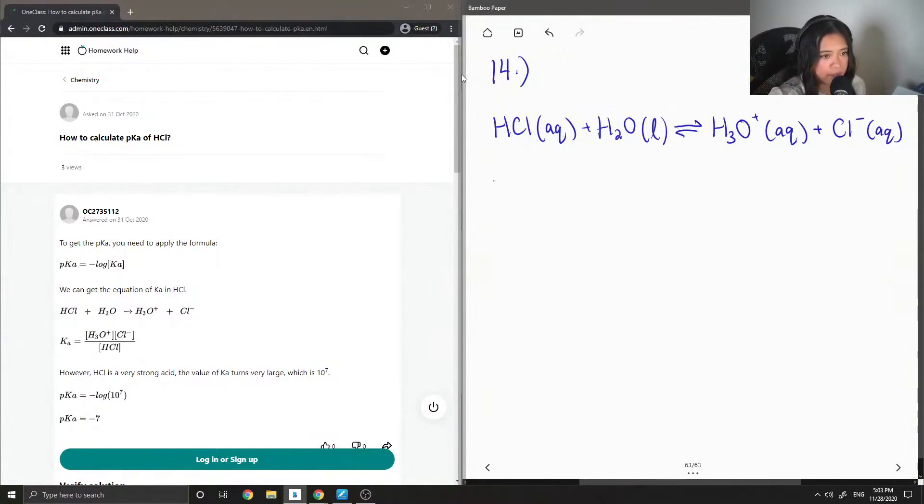So first let's recall that to find the Ka value, it is the concentration of H3O plus times the concentration of chlorine minus divided by the concentration of HCl.